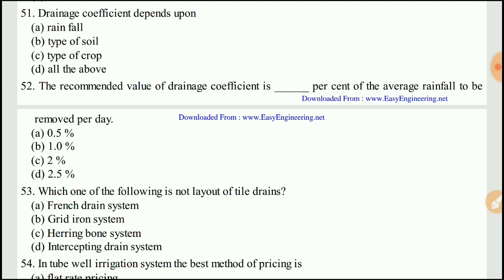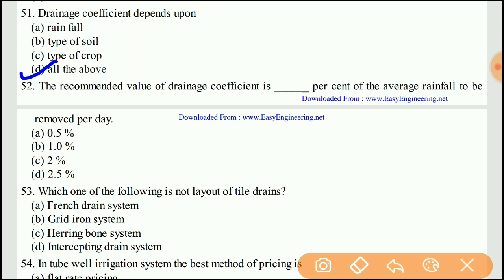Question 51: The drainage coefficient depends upon — the right answer would be D, all of the above. It depends on rainfall, the type of soil, and the type of crop.